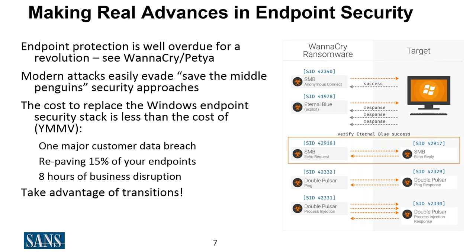Recent attacks like WannaCry and NotPetya pointed this out clearly — they mostly targeted well-known vulnerabilities, but since there hadn't been attacks against those vulnerabilities before, there were no signatures. If you've ever watched penguins on an iceberg while sea lions leap up to eat the ones on the outer edge — to me, that's the antivirus model. A few companies endure breaches, signatures come out for those attacks, and later attacks are stopped, saving the middle penguins. But modern attacks evolve so quickly that strategy really hasn't worked in years.